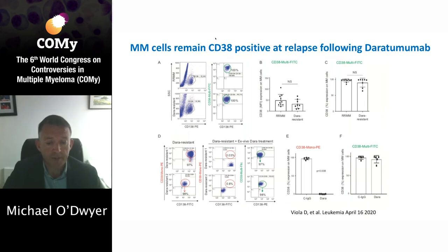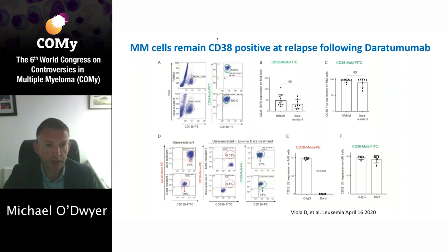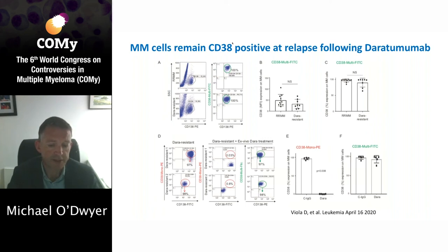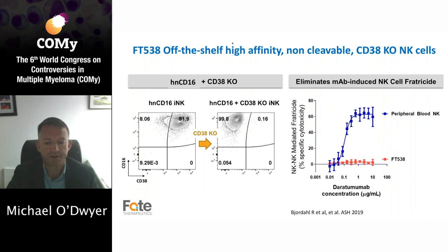Following progression on daratumumab, the value of further targeting CD38 has been questioned, partly on the basis that CD38 levels were thought to be reduced on plasma cells in patients progressing on daratumumab. However, in a recent paper, data on the right-hand side show that in patients progressing on daratumumab, there does indeed appear to be strong CD38 expression when using a multi-epitope CD38 monoclonal antibody. CD38 expression appears to be maintained with progression, and progression is more really due to immune exhaustion and a lack of sufficient effector cells. Therefore, the adoptive transfer of potent allogeneic NK cells along with daratumumab could potentially recapture response in these patients.